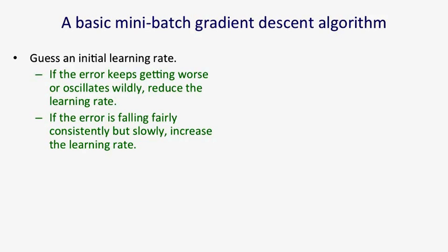You also look to see if the error is falling too slowly. You expect that the error might fluctuate a bit if you measure it on a validation set because the gradient on each mini-batch is just a rough estimate of the overall gradient. So you don't want to reduce the learning rate every time the error rises. But what you're hoping is the error will fall fairly consistently. And if it's falling fairly consistently and very slowly, you can probably increase the learning rate.